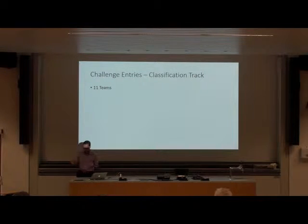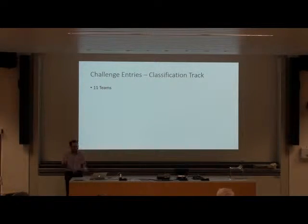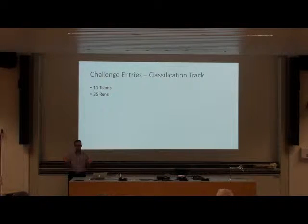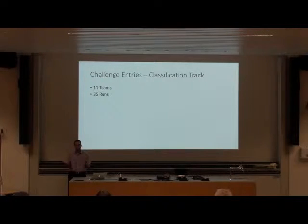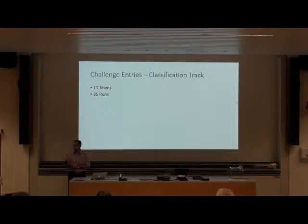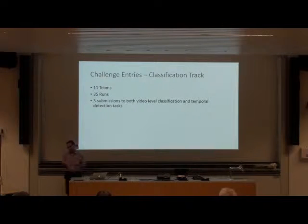To summarize, we had 11 submissions from 11 teams, with a total of 35 runs. Each team could submit up to five runs. The ground pool was developed so teams wouldn't know which run would be best, and we would perform the evaluation and take the best mean average precision score for each team.